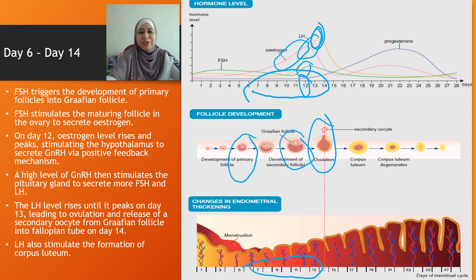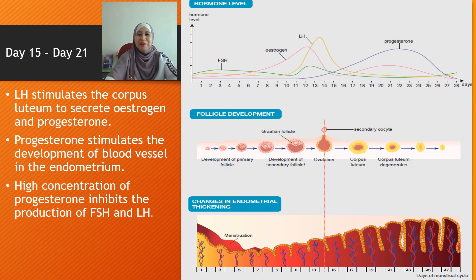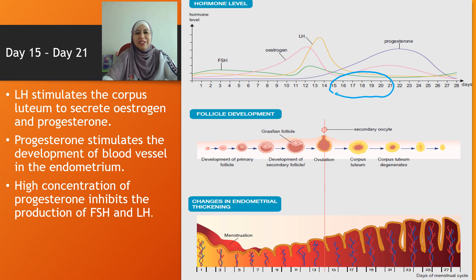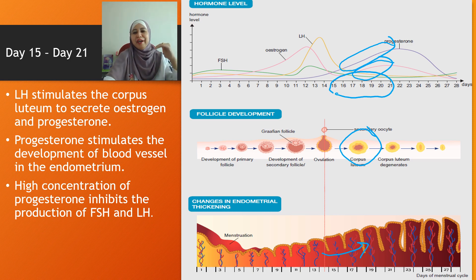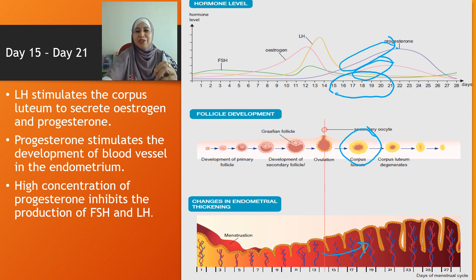From day 15 to day 21, LH stimulates the corpus luteum to secrete estrogen and progesterone — progesterone shown in purple and estrogen in pink. Progesterone stimulates the development of blood vessels in the endometrium; the endometrium repairs and becomes thickened. High concentration of progesterone then inhibits the production of FSH and LH — that is negative feedback mechanism.